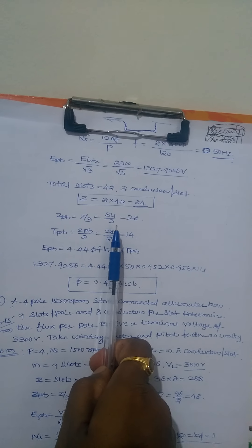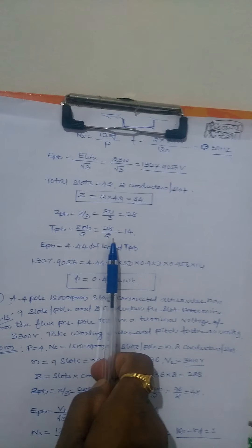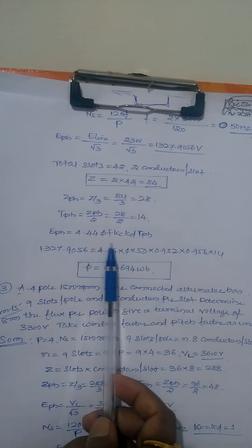Total slots is 42 with 2 conductors per slot, so Z equals 2 into 42, that is 84 conductors. Z phase equals Z by 3: 84 by 3 equals 28. T phase equals Z phase by 2: 28 by 2, that is 14 turns.